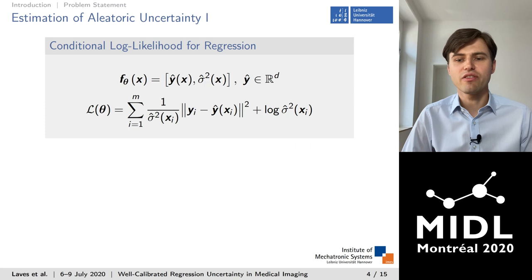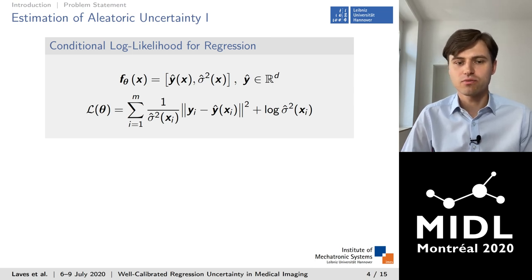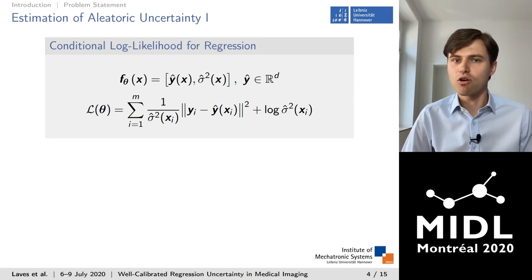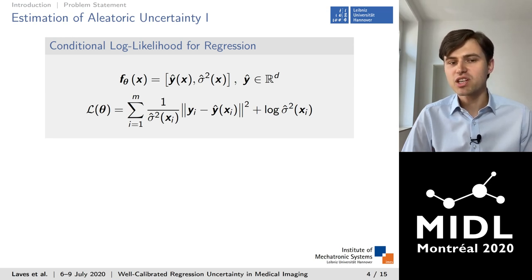First I want to discuss the estimation of aleatoric uncertainty. The goal of our regression model is to predict a continuous target value y given a new input x and a training set of images and corresponding target values. We assume that y has a Gaussian distribution with mean equal to ŷ and variance σ̂². A neural network f with parameters θ outputs these values. To train f, we place a Gaussian prior over the parameters and perform maximum posterior estimation by minimizing the negative log likelihood with added weight decay. Here y and σ are estimated jointly by finding θ that minimizes this loss function.